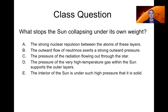The next option was the outward flow of neutrinos. There are lots of neutrinos flowing out through the sun, but they are very weakly interacting fundamental particles, which means that even though there's a huge flux of them, they do not exert any significant outward pressure in conditions like the sun. There are conditions in astrophysics — for instance in a supernova explosion we'll encounter later — where neutrino flow may exert significant pressure, but not in normal stars like the sun.